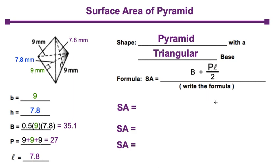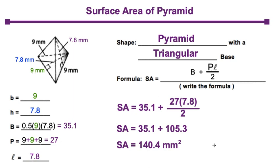So now that we know those values, plug it into your formula and simplify. Finally add and don't forget to label: 140.4 millimeters squared.